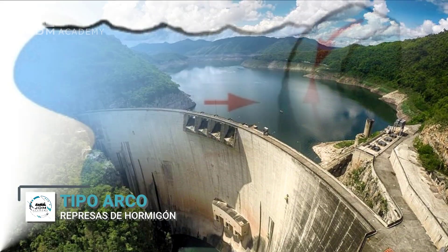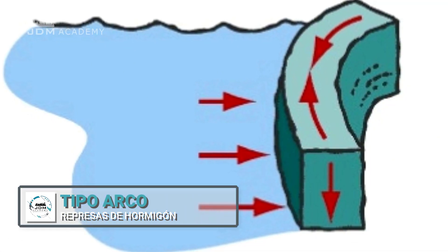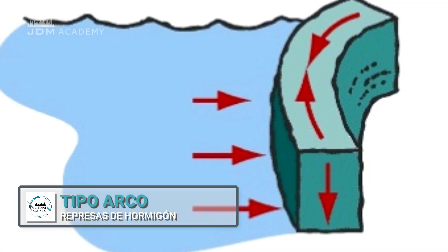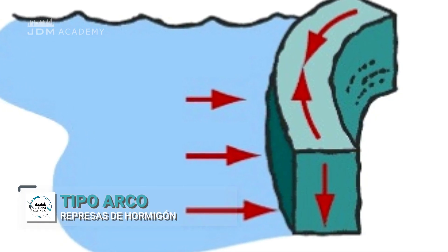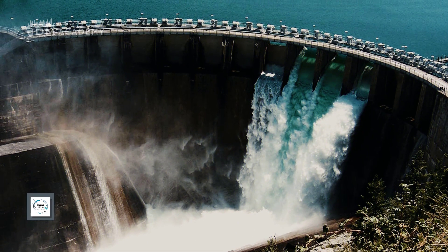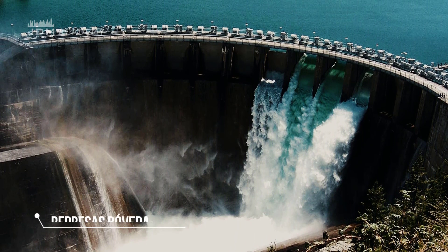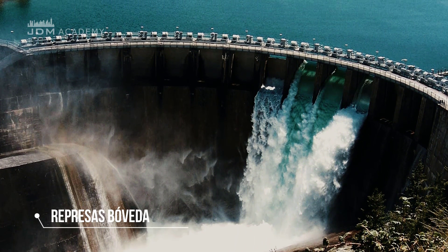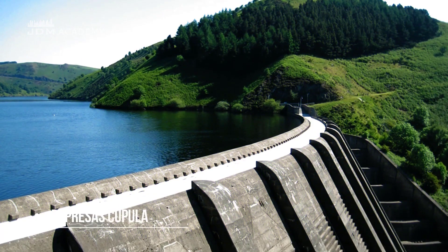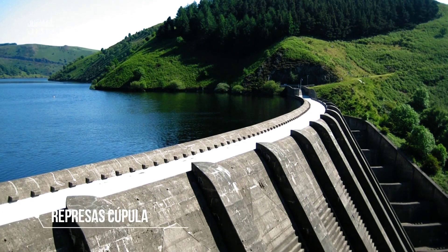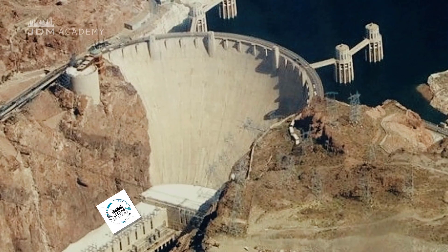Represas de arco (Arch dams) — dams that are curved because they resist by transmitting water thrust to the valley walls. They can have only horizontal curvature, in which case they are known as bóveda (vault) dams.